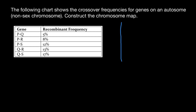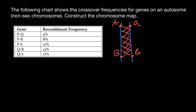Imagine two homologous chromosomes. Here we have gene A at one locus and gene B at another locus. The greater the distance between two genes, the higher the chance that crossing over will happen between them. If we move gene B closer to gene A, the frequency of crossing over would be greatly reduced, because crossing over frequency directly correlates with the distance between two genes.